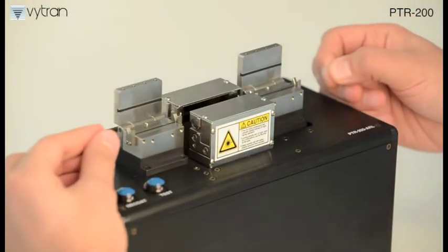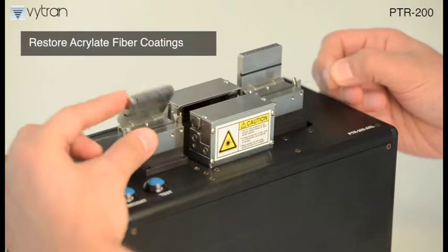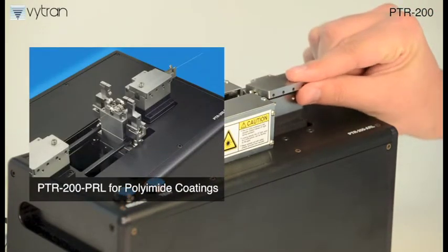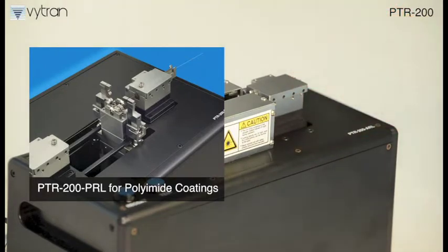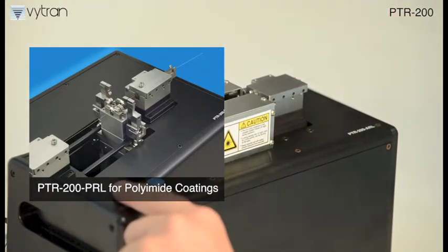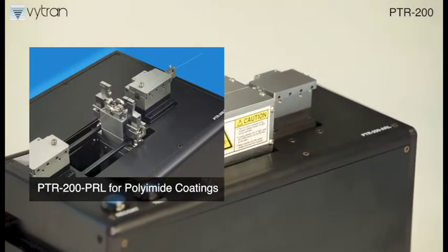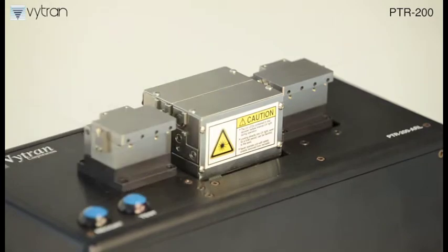Vytran's standard PTR-200 recoaters are designed to restore acrylate fiber coatings. We also offer a special PTR-200 unit, the PTR-200 PRL. The PTR-200 PRL is a unique system that uses a thermal curing process to restore polyimide coatings.